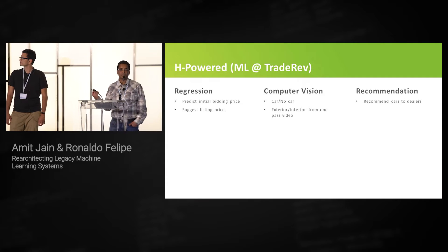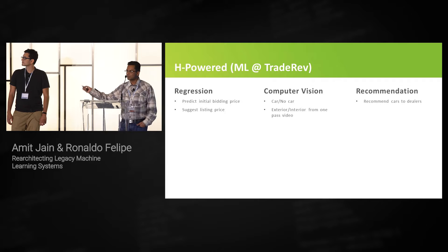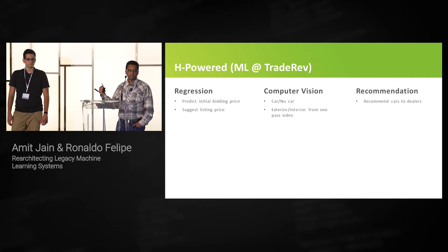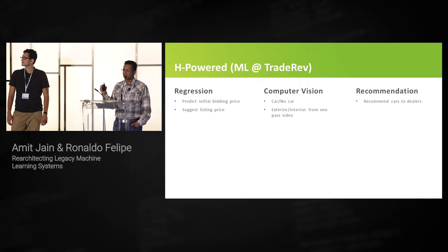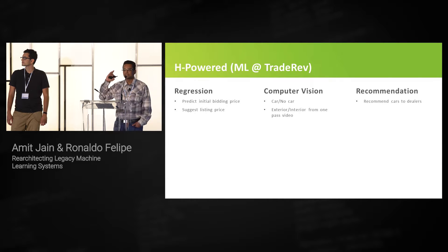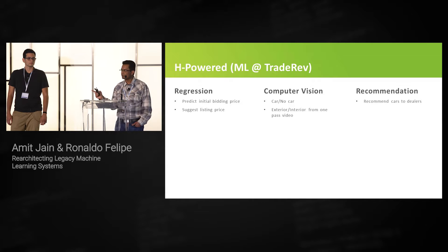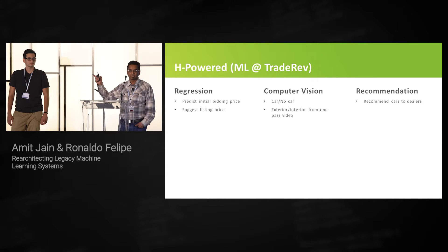These are the three main verticals where we use machine learning within TradeRev. The three main verticals are regression, computer vision, and recommendation systems.